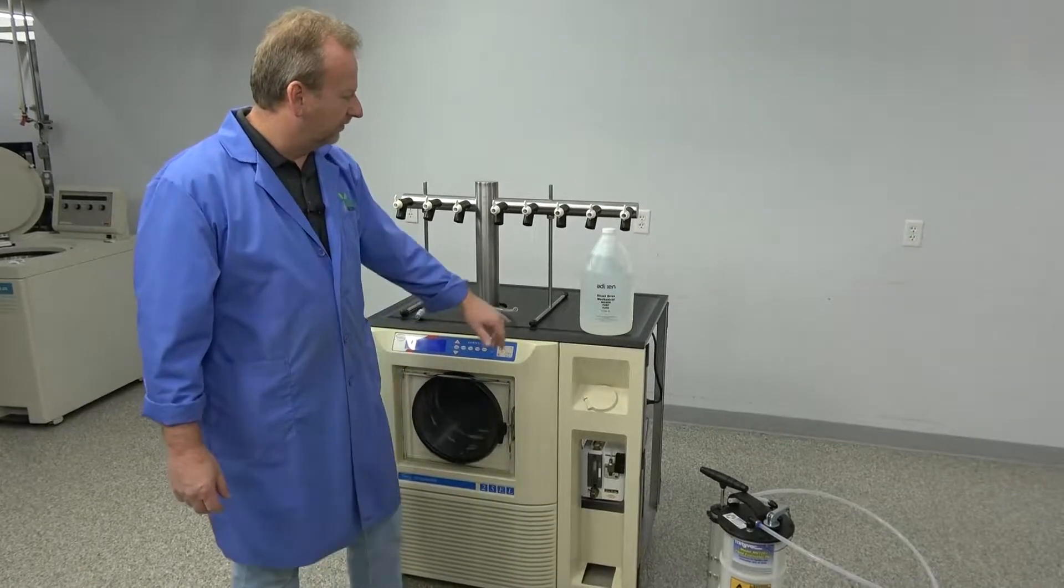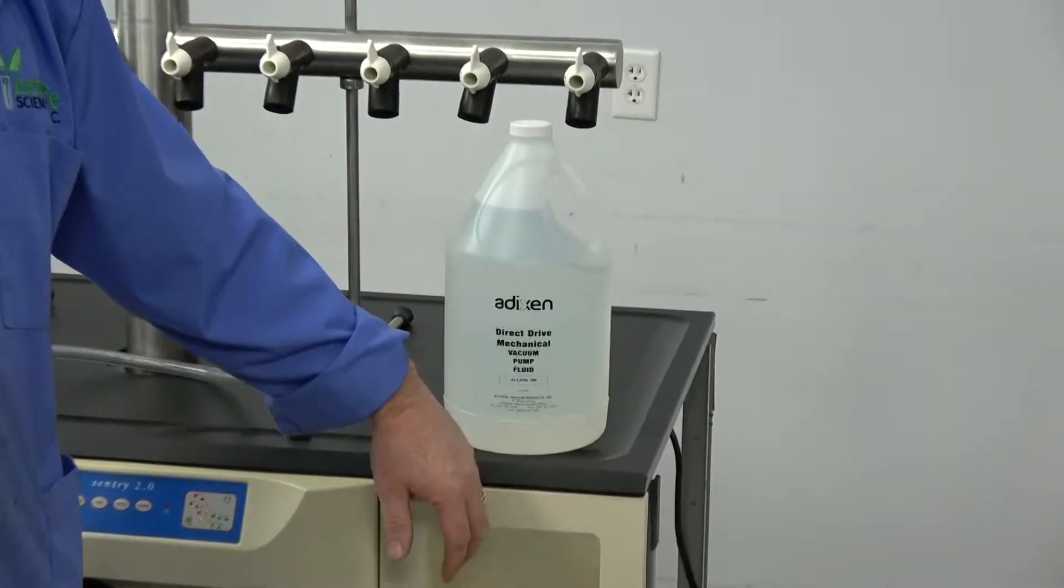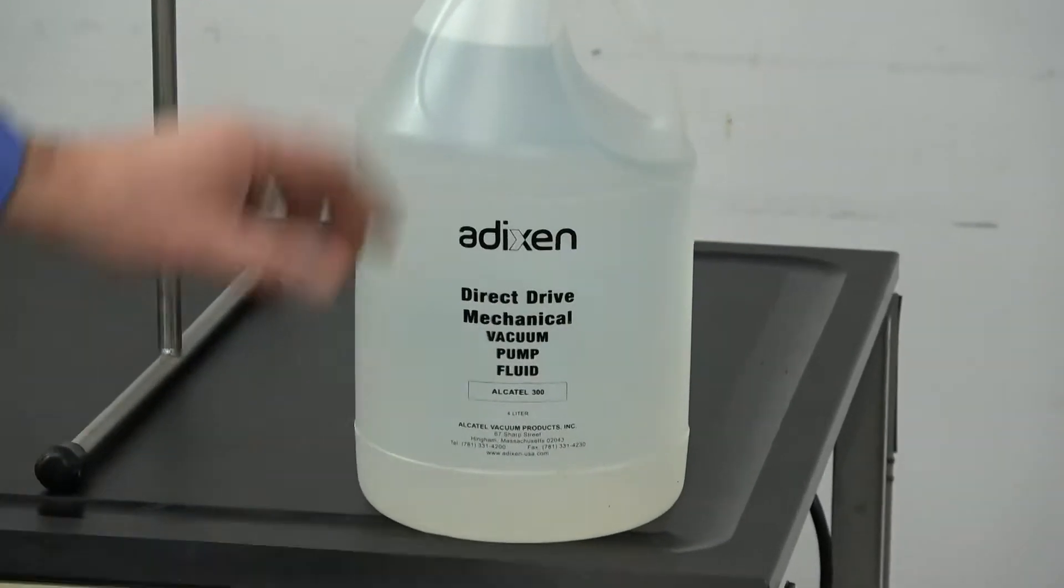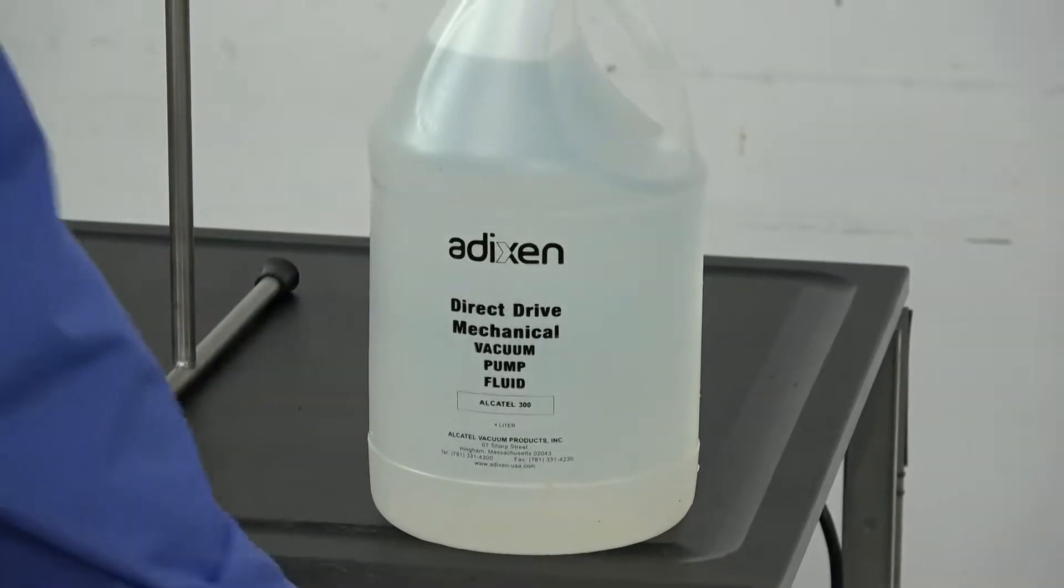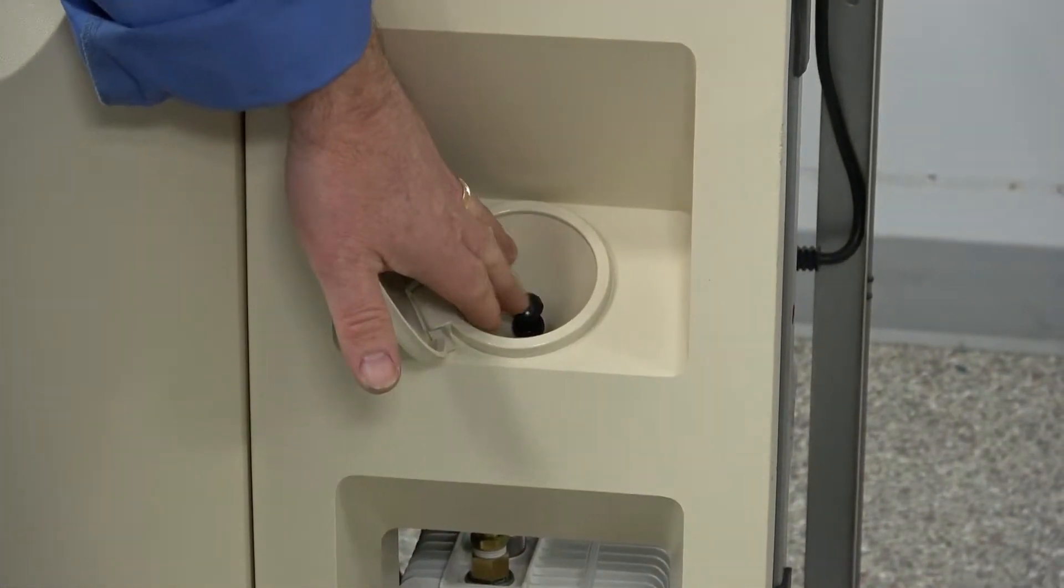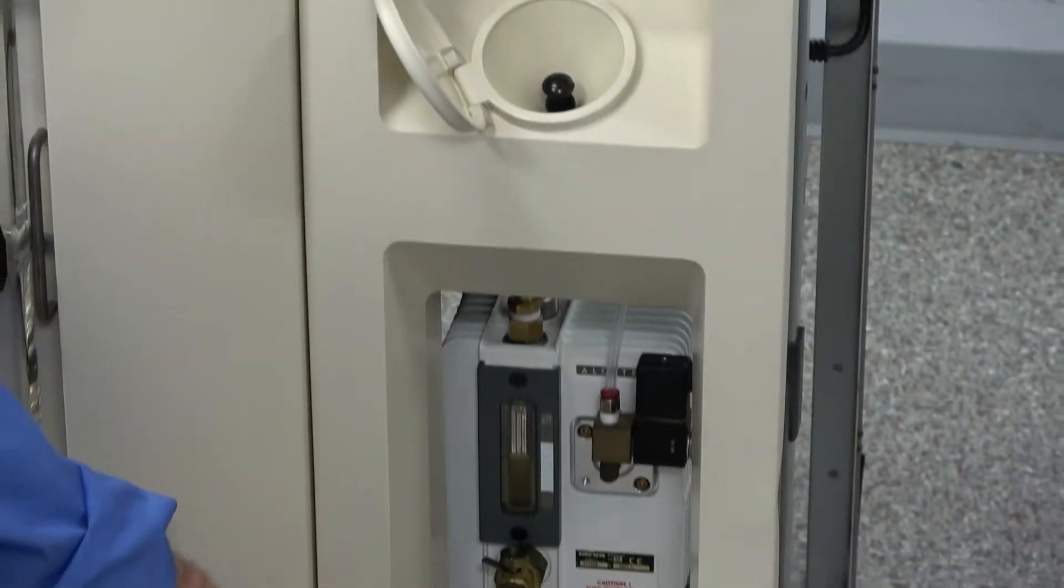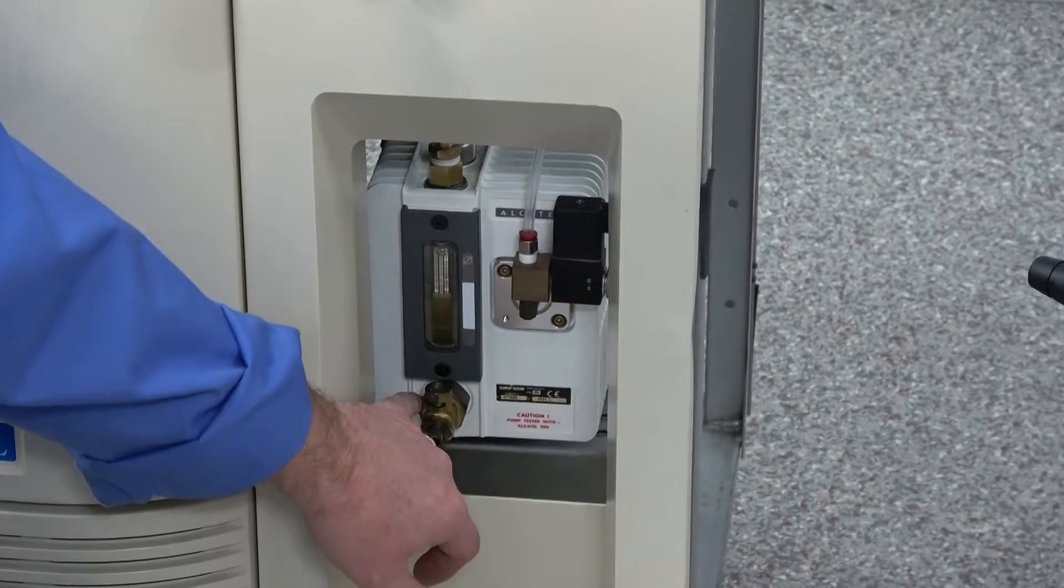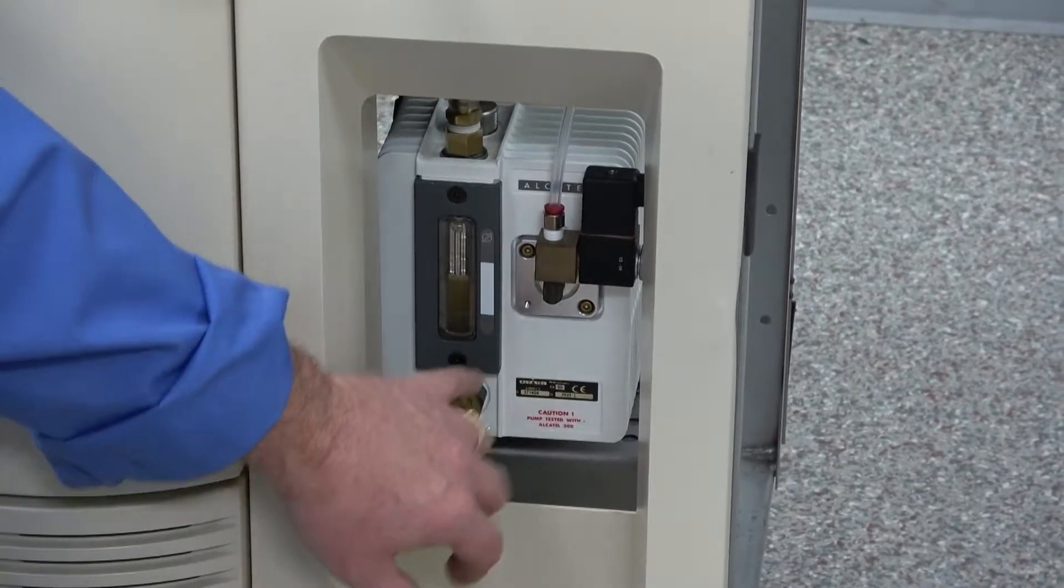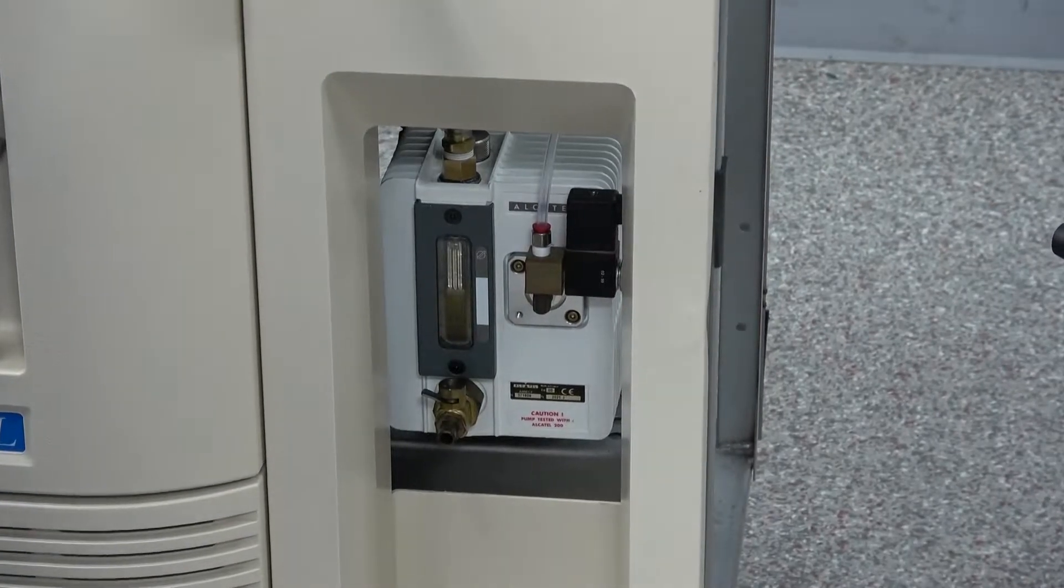But right now we've got the Addixson direct drive vacuum pump oil that we use in these because we use the Alcatel pumps. And of course, we've got down here the spout with the plug that we'll be removing when we're adding. And down here, of course, we've got the pump with the quick valve open here. But the pump is nice and warm. It's actually running right now. We're going to shut it off before we change it.